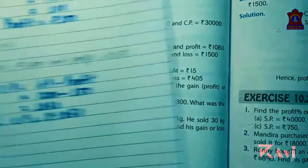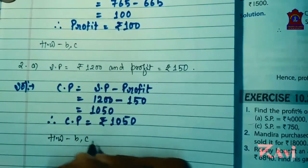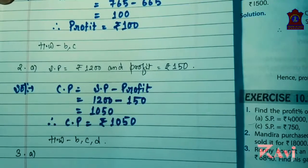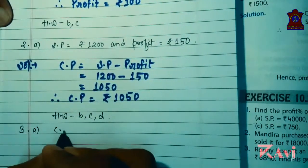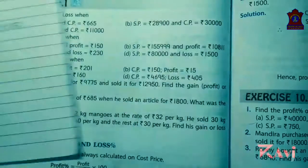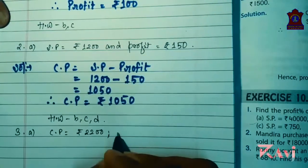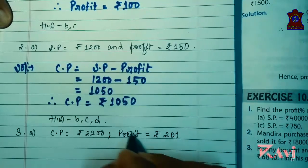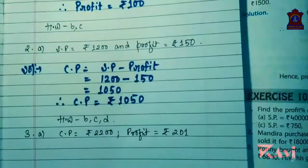Find the selling price — look at question number three. Try question B, C and D by yourself. Question three A: CP equals rupees 2200 and profit is 201. The question is asking you to find out the selling price SP.